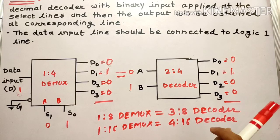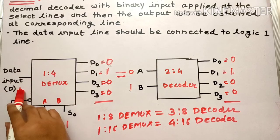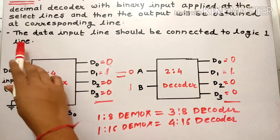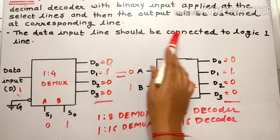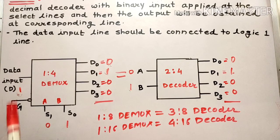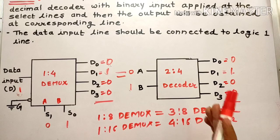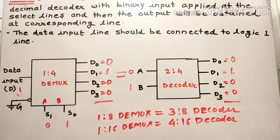There is just one thing to remember: when you want the demultiplexer to behave like a decoder, the data input value must be set to 1. The data input line should be connected to logic 1. Then only the demultiplexer will behave like a decoder. This is how we can use a demultiplexer as a decoder.